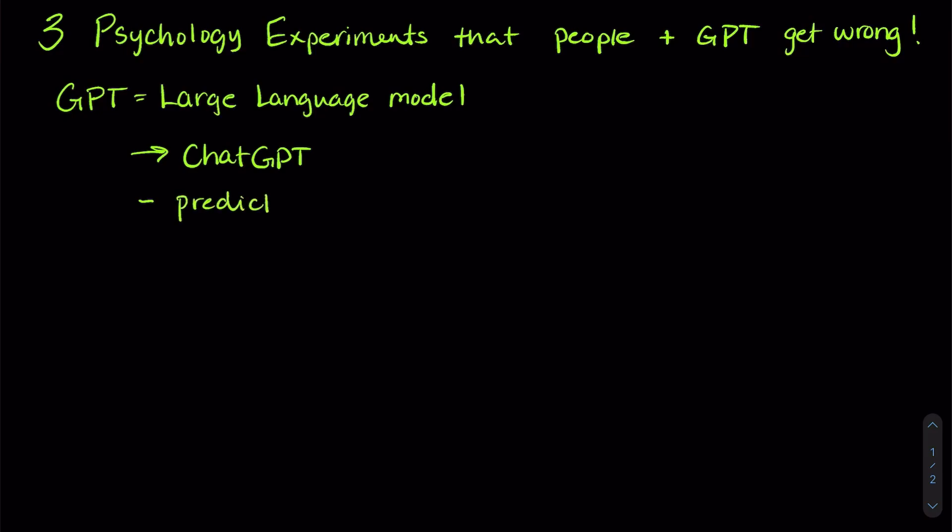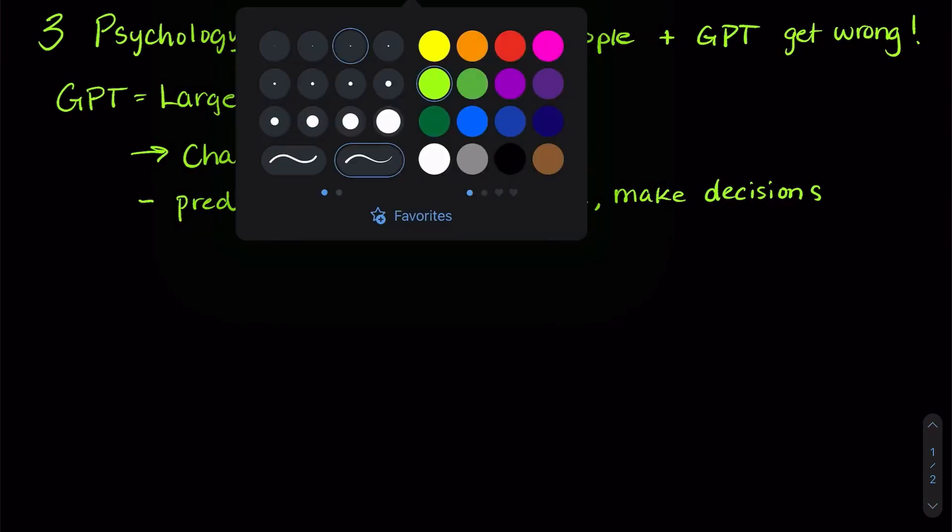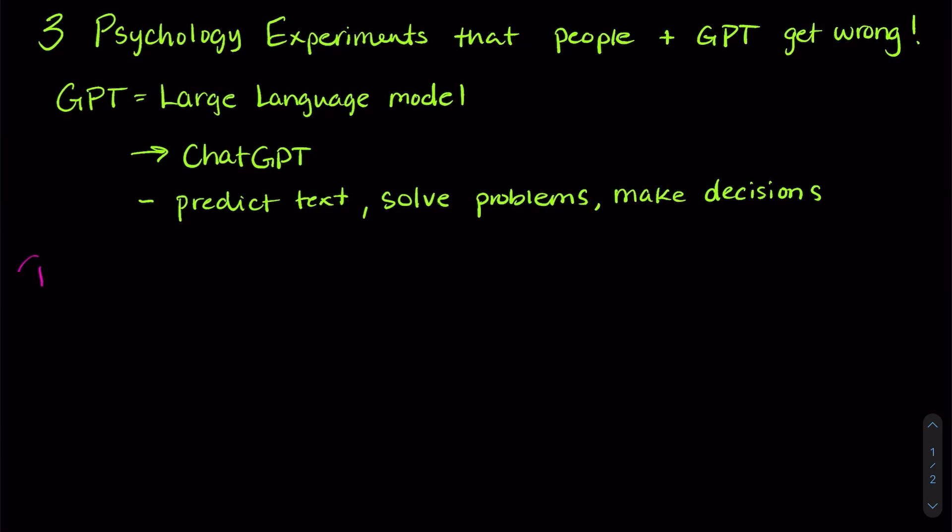Like predict text, they can solve problems, and they can even make decisions. But the question is how good are they? So today we're going to talk about three psychology experiments, these are classics, and we're going to see how well people and GPT do in making their decisions.